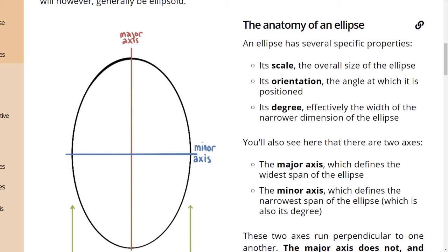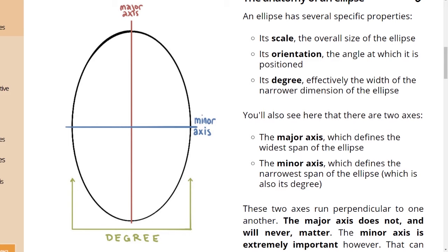The anatomy of an ellipse. An ellipse has several specific properties. Its scale, the overall size of the ellipse, its orientation, the angle at which it is positioned, its degree, effectively the width of the narrower dimension of the ellipse. You'll also see here that there are two axes. The major axis, which defines the widest span of the ellipse, and the minor axis, which defines the narrowest span of the ellipse, which is also its degree.